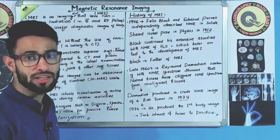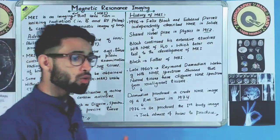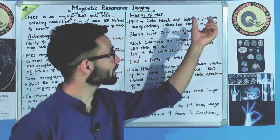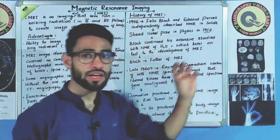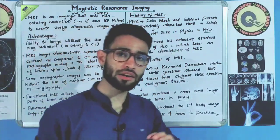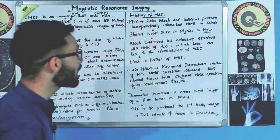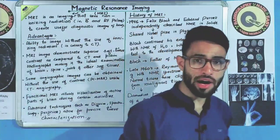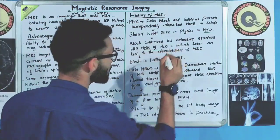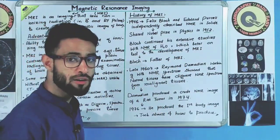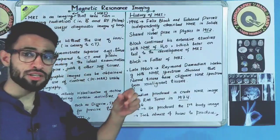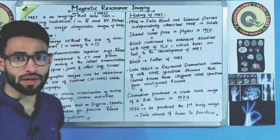After winning the Nobel Prize in 1952, Felix Bloch continued his research. He extended his study from nuclear magnetic resonance in solids to NMR in water — that is, nuclear magnetic resonance of water. Today's MRI is developed on the basis of NMR of water.